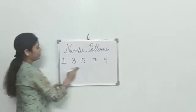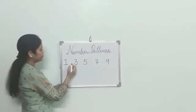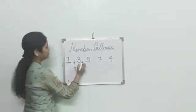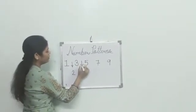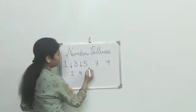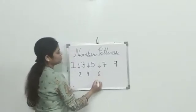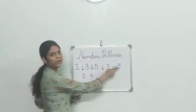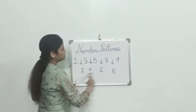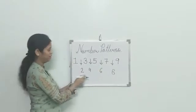Check carefully — between 1 and 3, which one is missing? Yes, number 2 is missing. Here, between 3 and 5, which number is missing? 4 is missing. Next, between 5 and 7, number 6 is missing. And between 7 and 9, number 8 is missing. Means, here we have skipped 2.